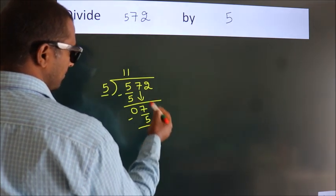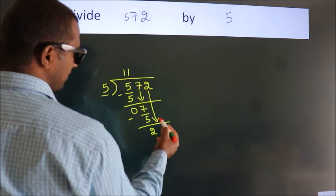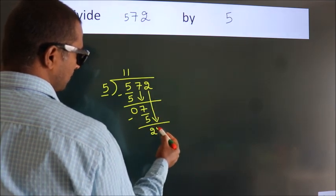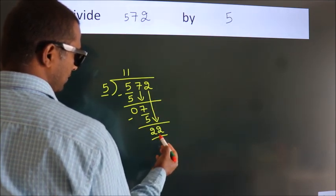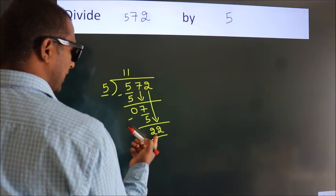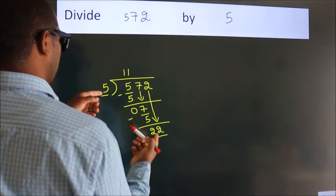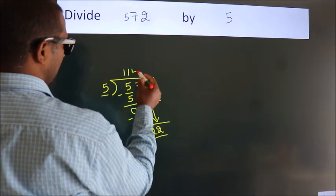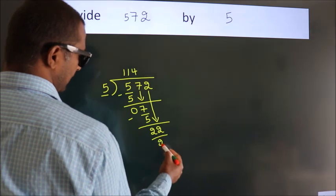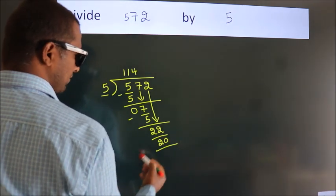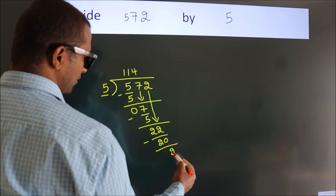After this, bring down the beside number, so 2 down, so 22. A number close to 22 in 5 table is 5 fours, 20. Now we subtract, we get 2.